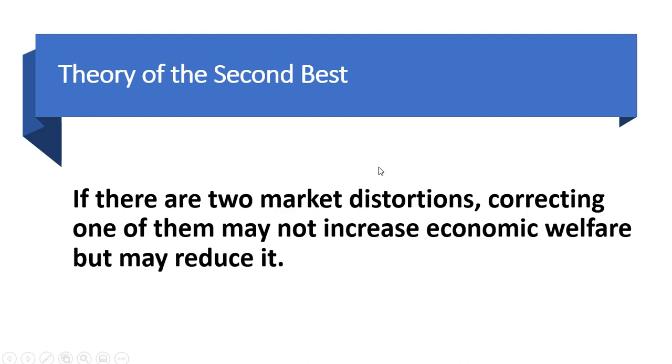Let's look at the theory of the second best. If there are two market distortions, correcting one of them may not increase economic welfare or total surplus, but may actually reduce it.